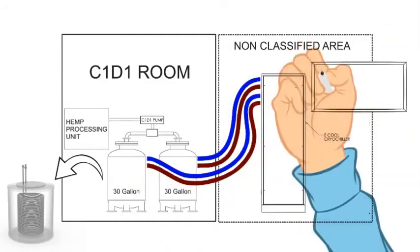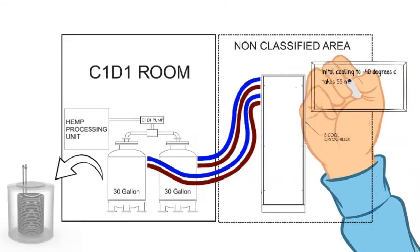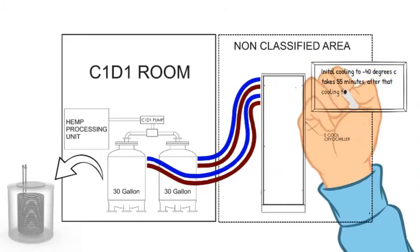It takes about 55 minutes to initially chill the 30 gallons down to minus 40. After that, it's closer to 40 minutes, depending on other variables.